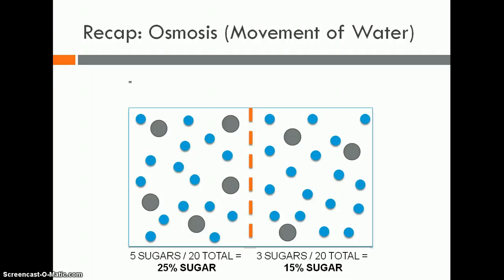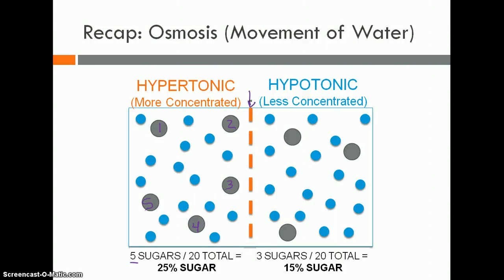Let's recap osmosis, the transport you're probably most familiar with — it's the movement of water. Looking at these sugar molecules, there are five on one side and three on the other side of the cell membrane. If there are more sugar molecules on one side, we refer to that as hypertonic. On the other side, with fewer particles, it's hypotonic — less concentrated.